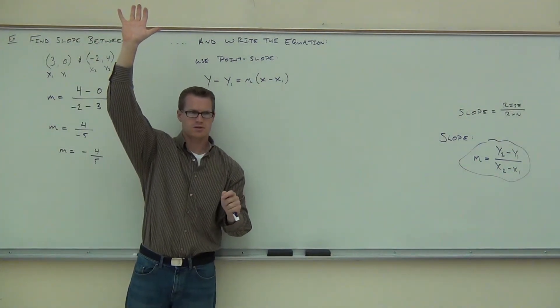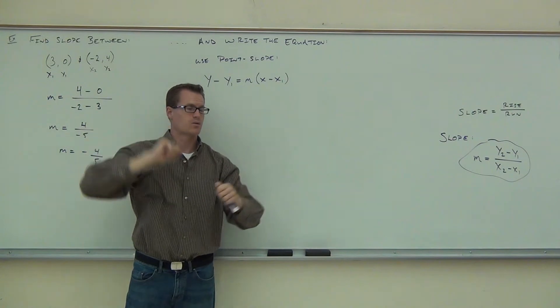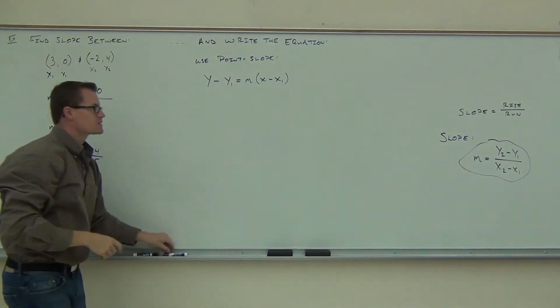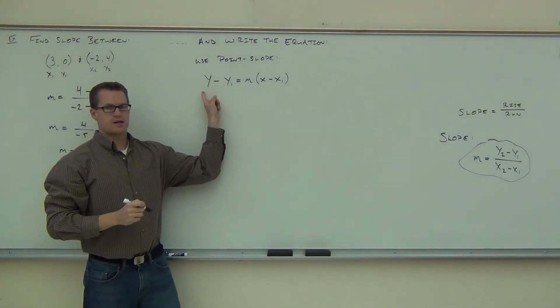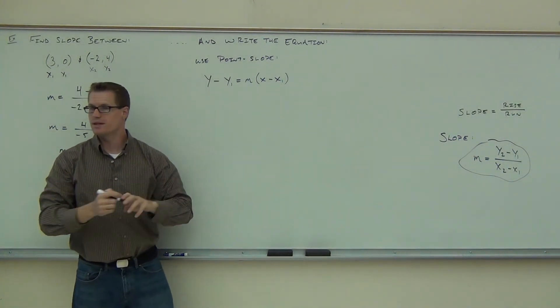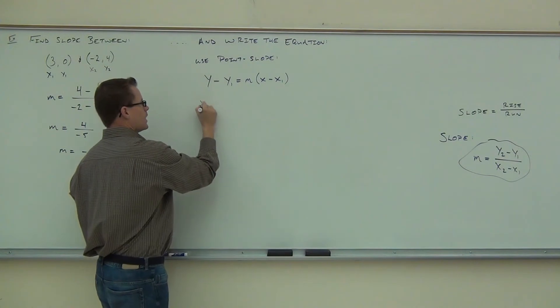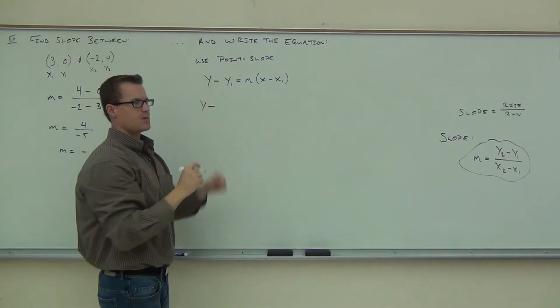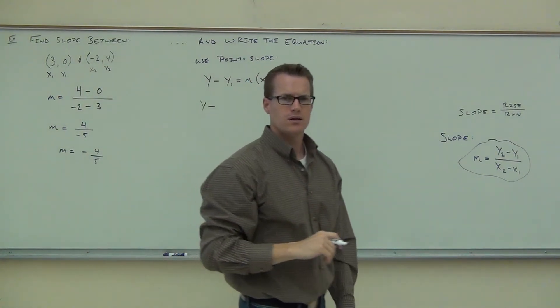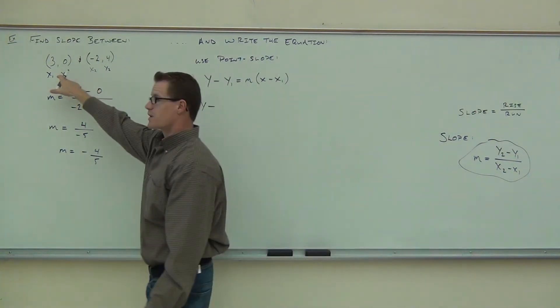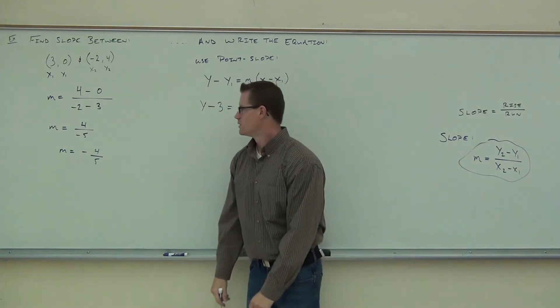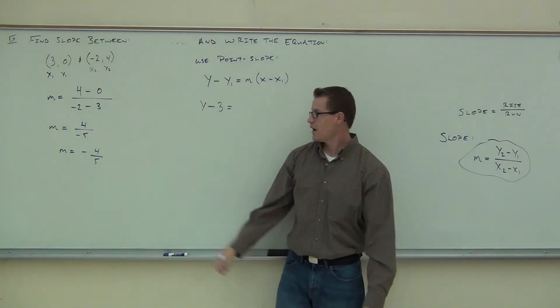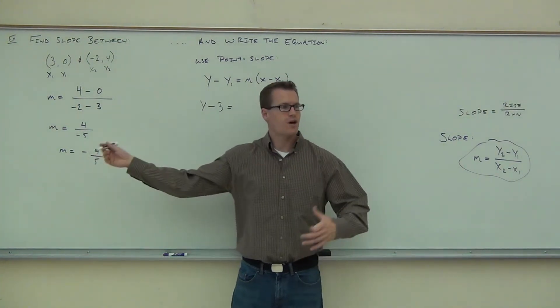Raise your hand if you're okay with this. Let's go ahead and substitute in some points then. Do I substitute anything in for this y right here? No, that's my variable. That's going to stay there no matter what. My minus stays as minus. How about the y₁? What's my y₁? Zero. Good. Equals m. What's my m? Negative four-fifths. Yeah, I just found that.